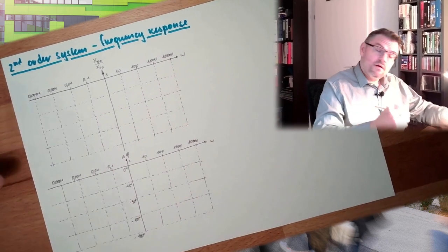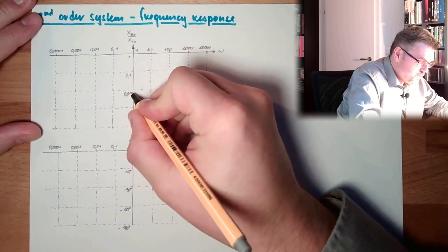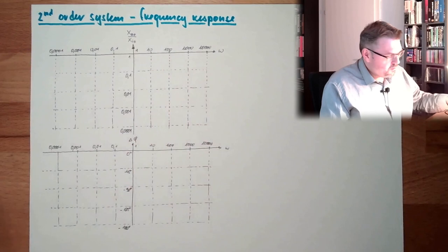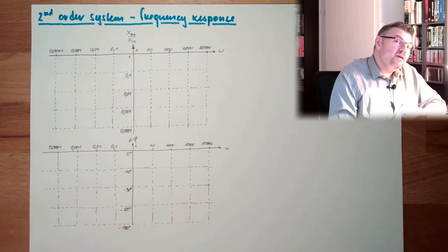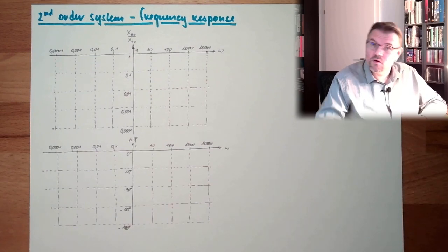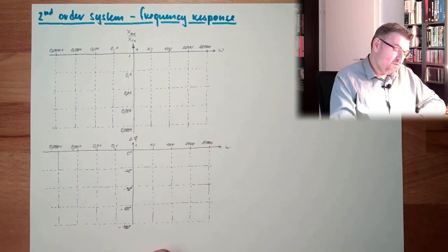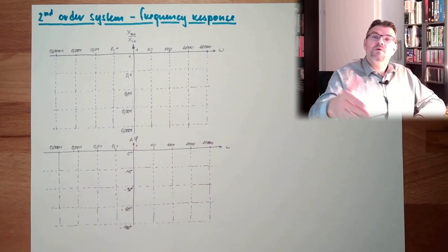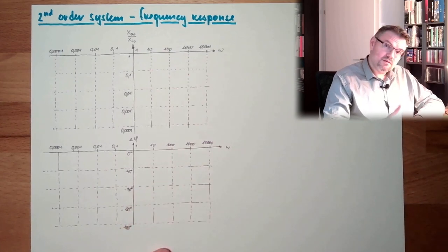On the logarithmic scale, we are at 1, then 0.1, 0.01, 0.001, 0.0001 — that's the amplitude ratio. The latency is given in degrees: 360 degrees would be a full swing late, minus 180 degrees would be half a swing late, and minus 90 degrees would be a quarter swing late, and so on.